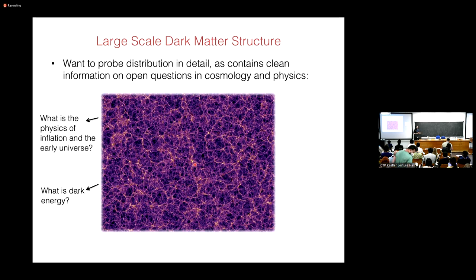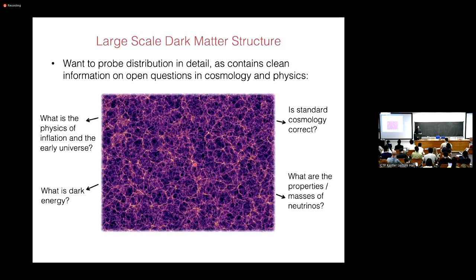Just to remind you, it would be amazing if we could directly map out the distribution of dark matter and mass in our universe. If we could map out this mass distribution directly, it would encode information — without the complications of galaxy biasing — on many key open questions in cosmology and physics. The mass distribution can tell you about the physics of inflation, the properties of dark energy, whether it's a cosmological constant or dynamical, the masses of neutrinos, and whether our standard cosmology correctly predicts how structures grow.